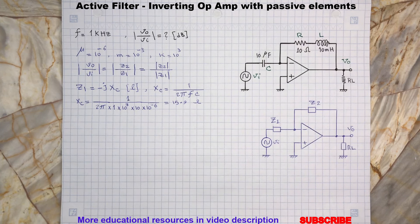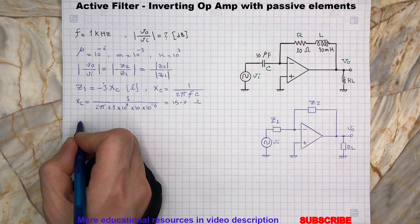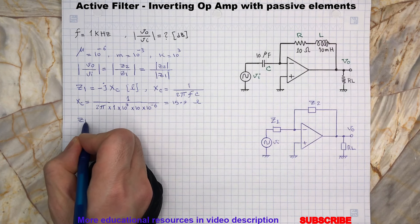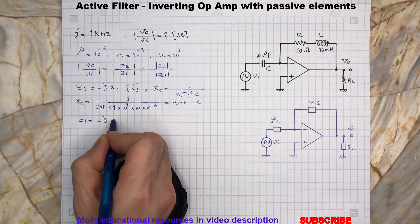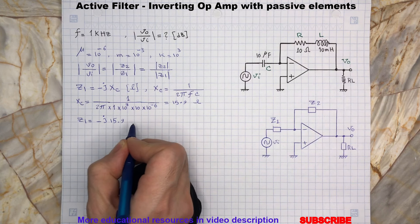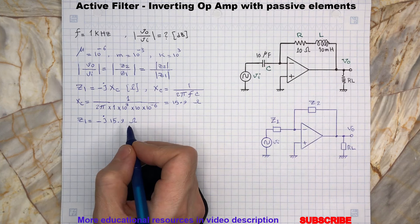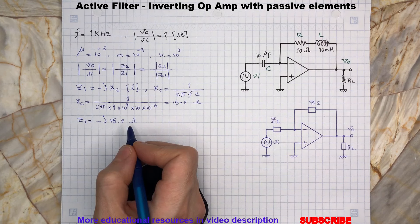So the impedance will be Z1, and its magnitude value is calculated.